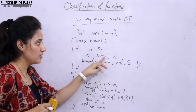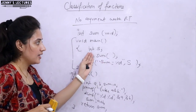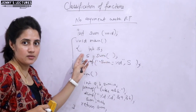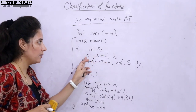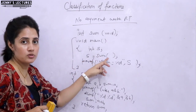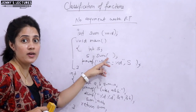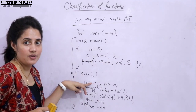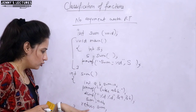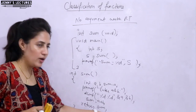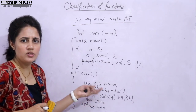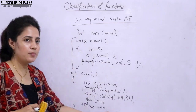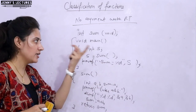You can see the difference in calling compared to the previous category. In the previous case, we just called sum() and that was it — we didn't store the result in any variable, because that function was not returning anything. If a function doesn't return anything, you can simply call it and print inside. But here, this function is returning something.